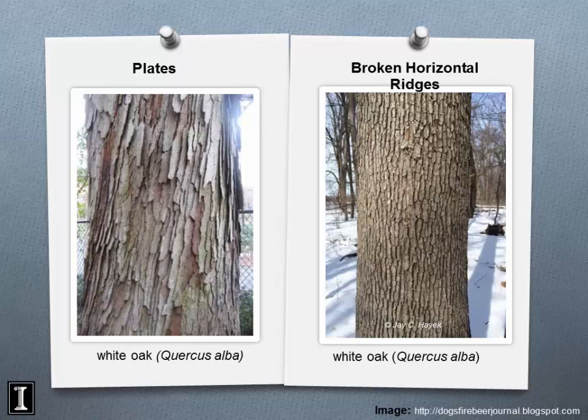Here's a white oak displaying a more platey bark morphology — this is what many veneer buyers look for when identifying veneer-grade white oak trees. Side by side with another white oak showing the different broken horizontal pattern — exact same species, just different bark texture. You can see why identifying trees by bark alone can be quite difficult.